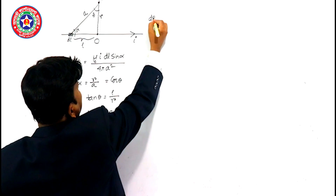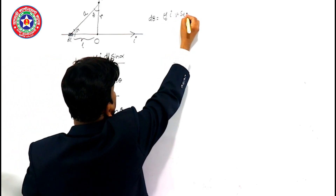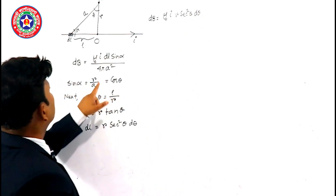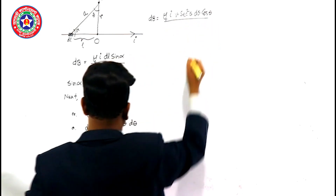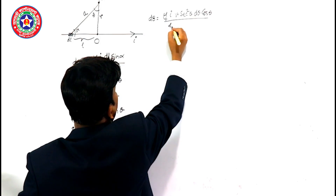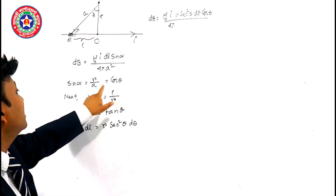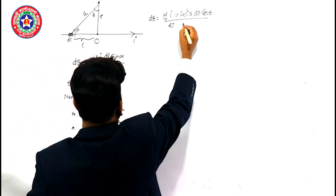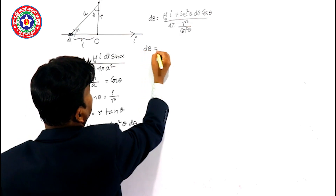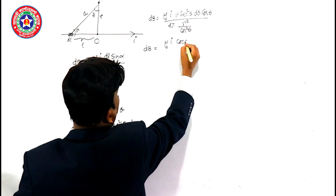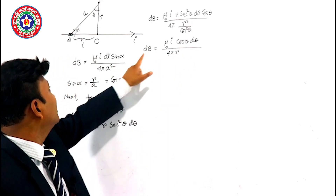Now putting this value in the above equation, we get dB equals mu naught I, where DL is R sec squared theta d theta, multiplied by sine alpha. Since sine alpha equals cos theta, we write cos theta divided by 4 pi A squared. Since R by A equals cos theta, we can write A equals R by cos theta, so A squared equals R squared by cos squared theta. From this we can write dB equals mu naught I cos theta d theta divided by 4 pi R. This magnetic field is due to the length DL.